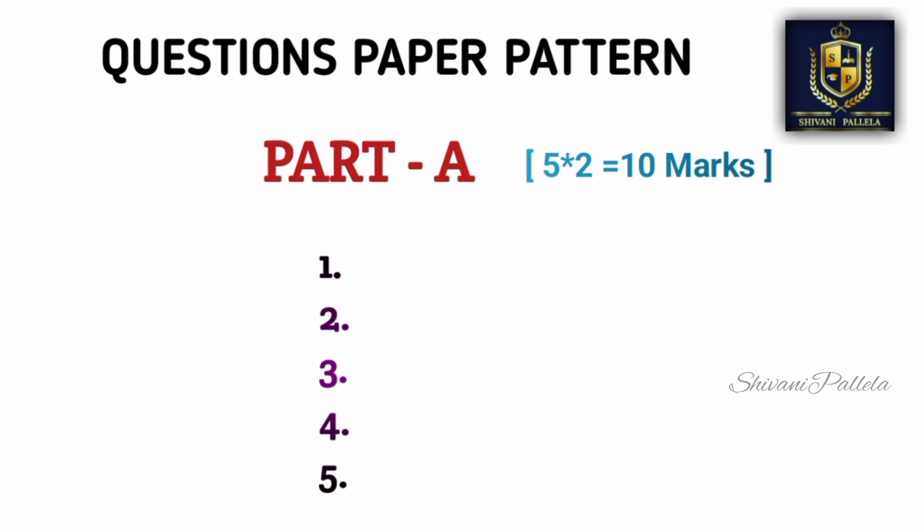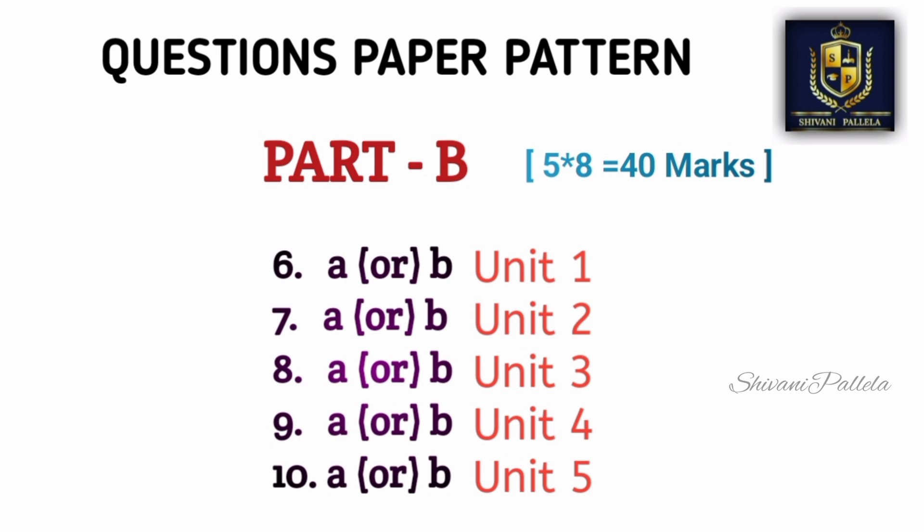Coming back to the question paper pattern: Part A consists of two-mark questions — they will give five questions, you need to attempt all five. Five to six sentences is more than enough for Part A, which is ten marks total. For Part B, six to ten questions will come.